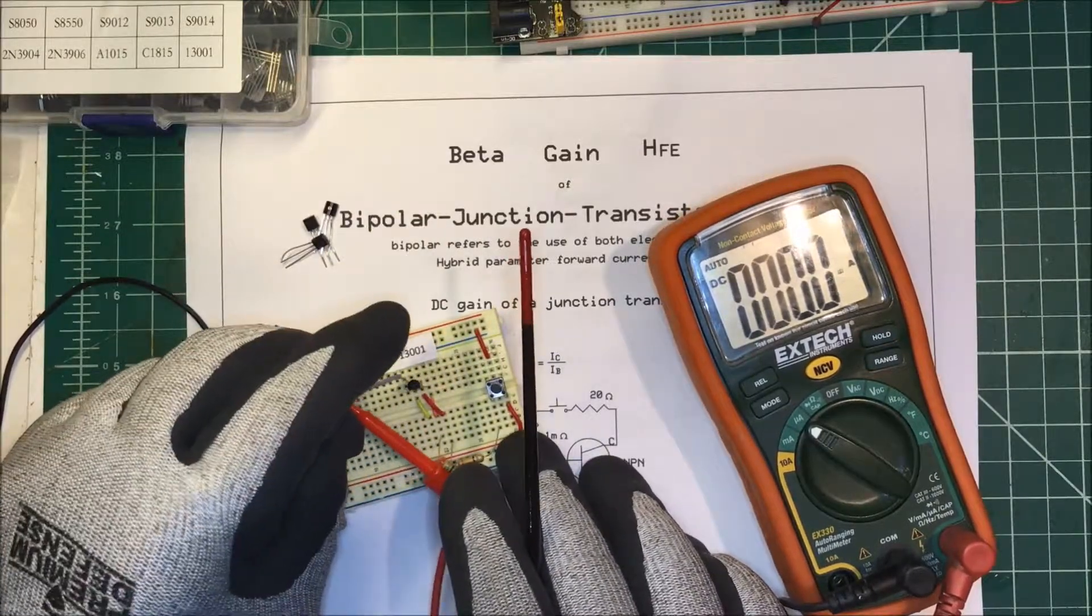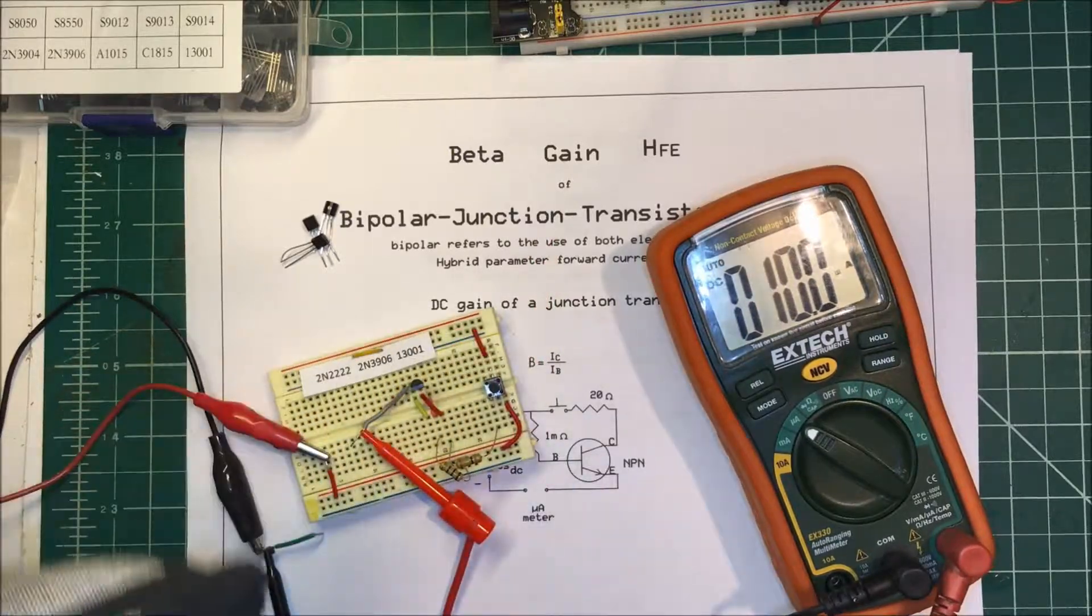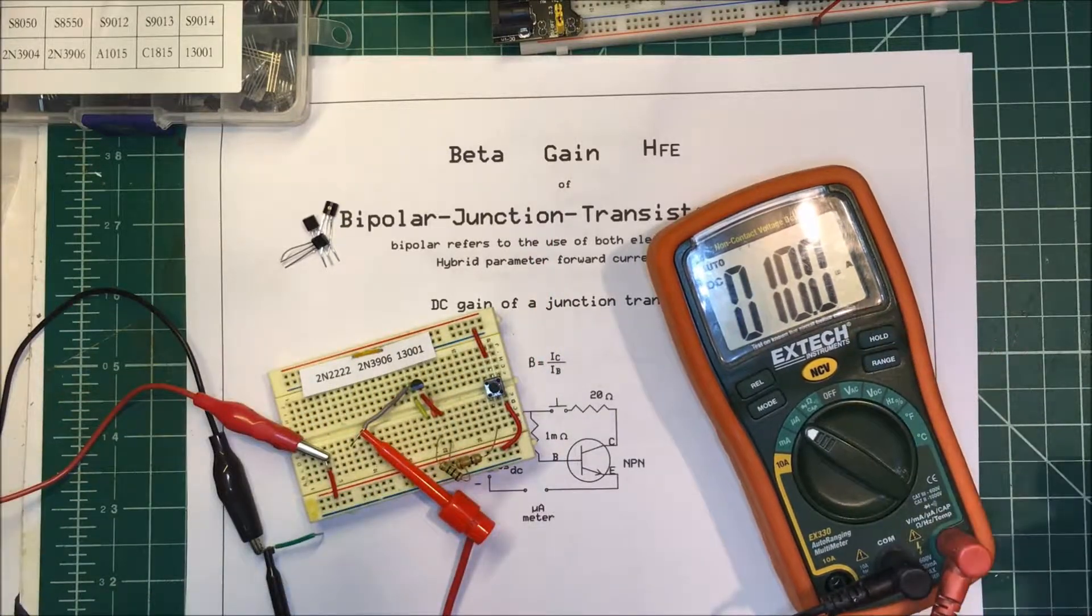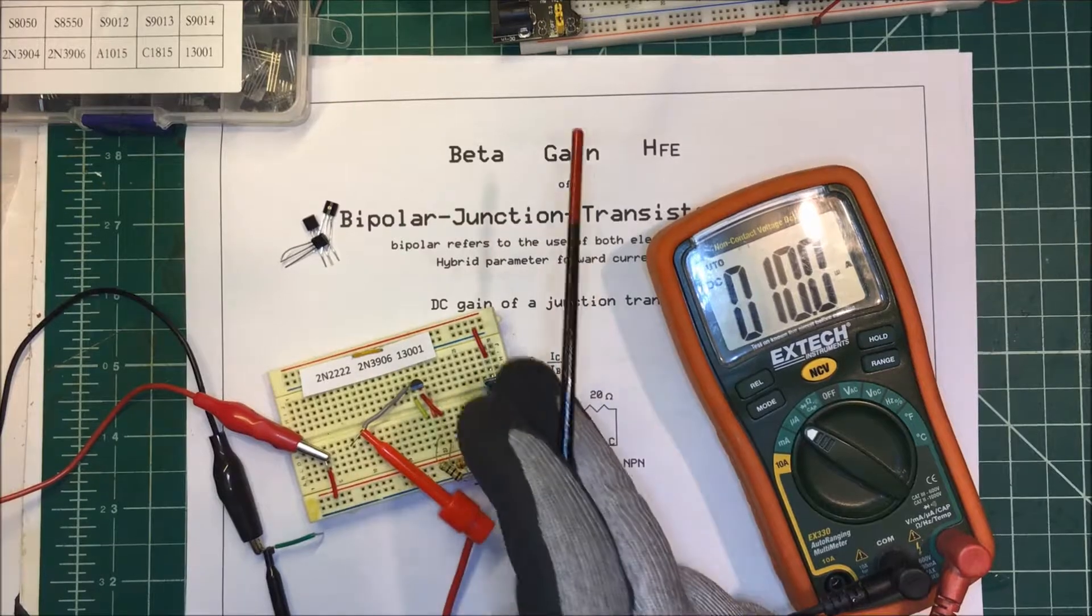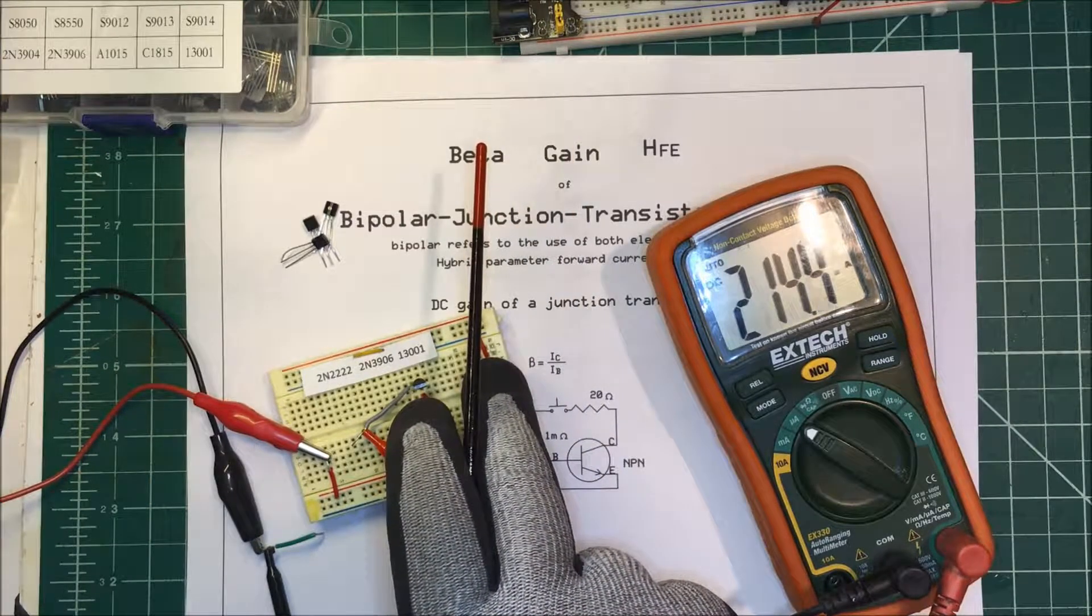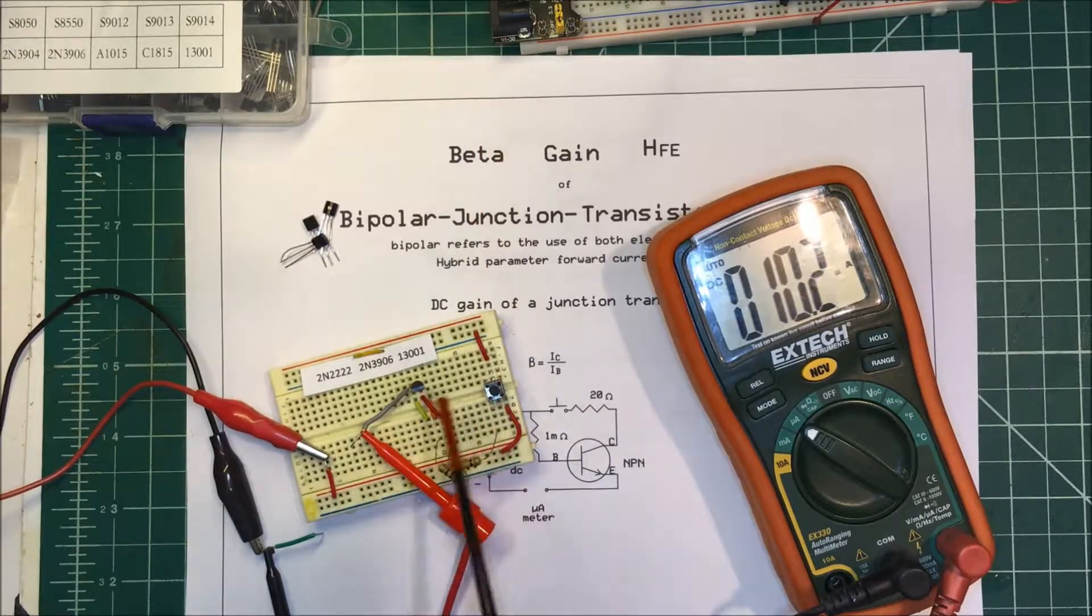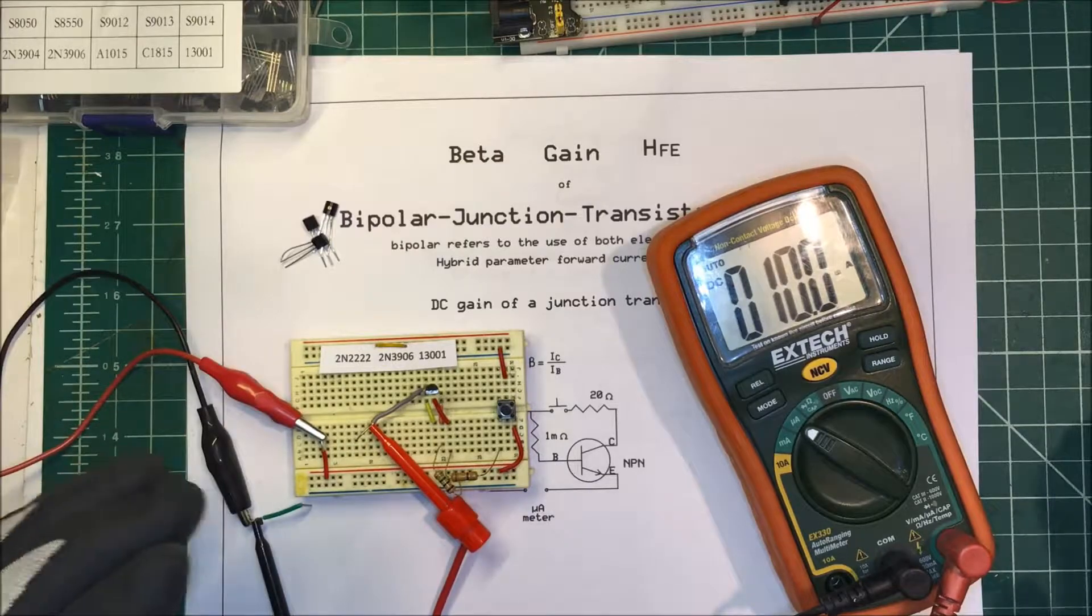10 microamps again, but now I've only got 21 divided, so that's going to be 21.4. So the gain on this one is only about 21, and that is true with the spec sheet if you look them up.